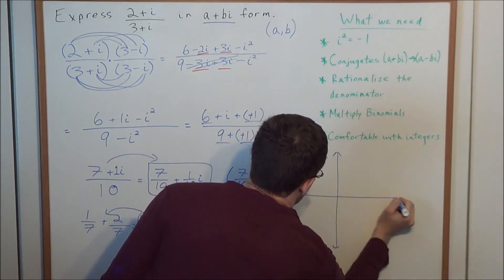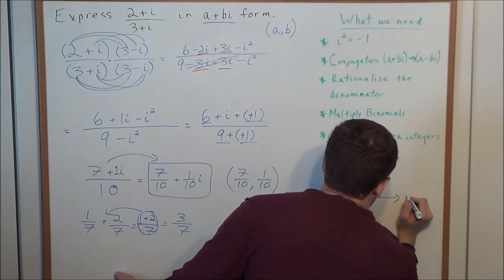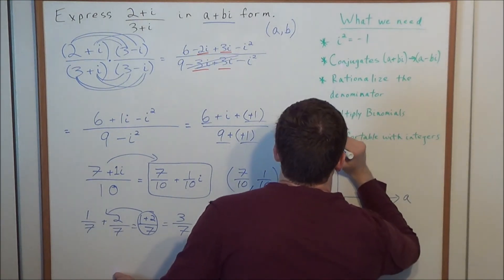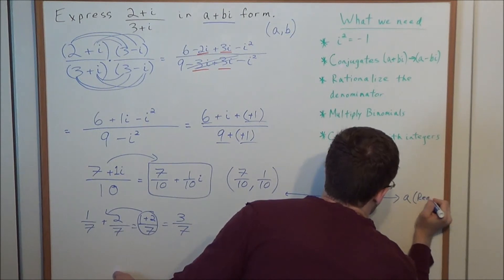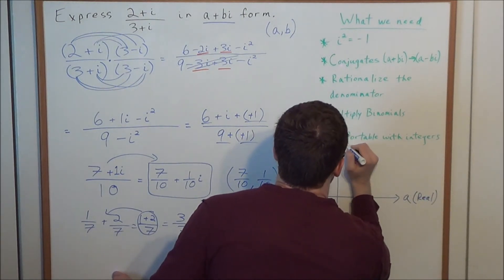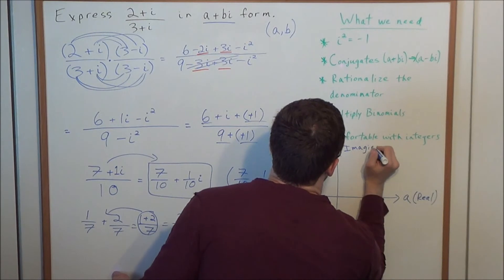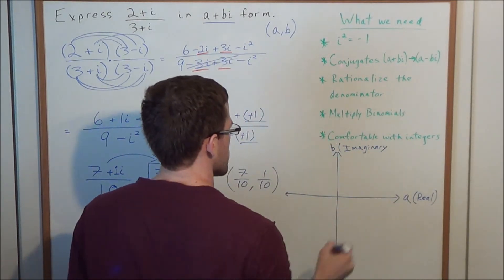And the way that we would graph this as a complex number, we wouldn't necessarily look at this as x, y. This would be the a and b axis, where a is the real part of the number, and b is the imaginary part of this number.